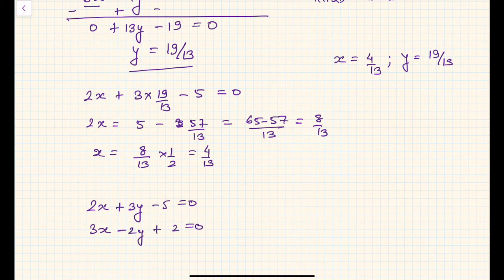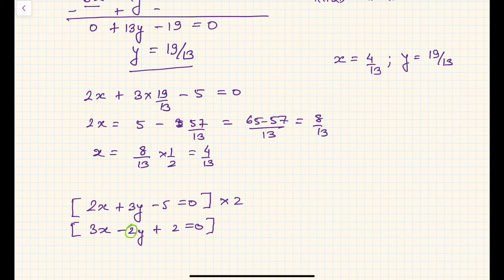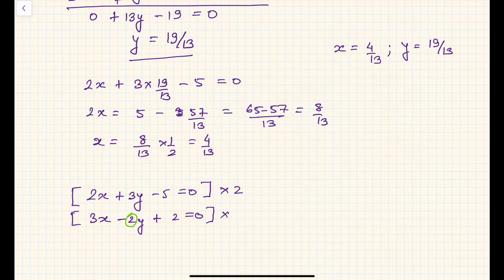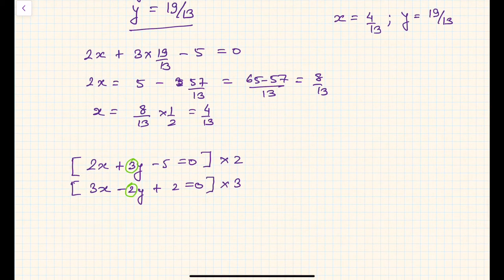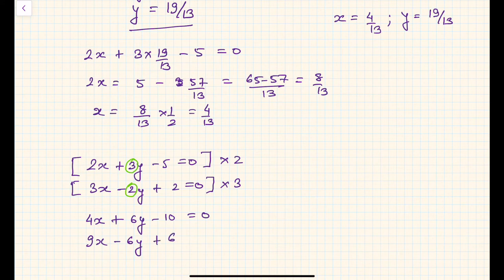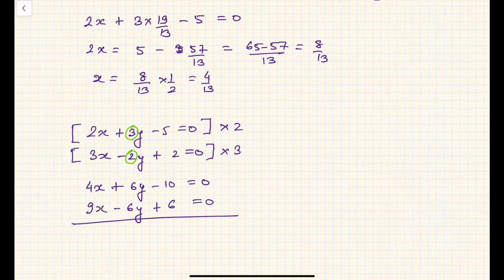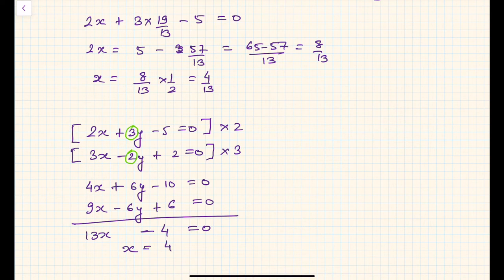To eliminate y we need to equate the coefficients of y. So we multiply the first equation by 2 (the coefficient of y in the second equation) and multiply the second equation by 3 (the coefficient of y in the first equation). This gives 4x + 6y − 10 = 0 and 9x − 6y + 6 = 0. Now simply add LHS to LHS and RHS to RHS: 4x + 9x = 13x, and 6y − 6y = 0, and −10 + 6 = −4. So 13x = 4, giving x = 4/13 — verified!